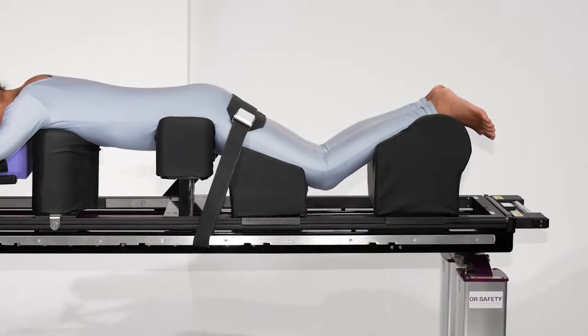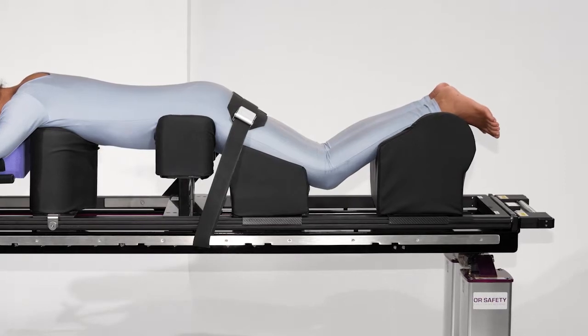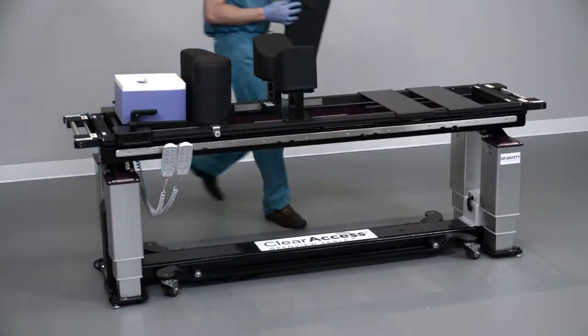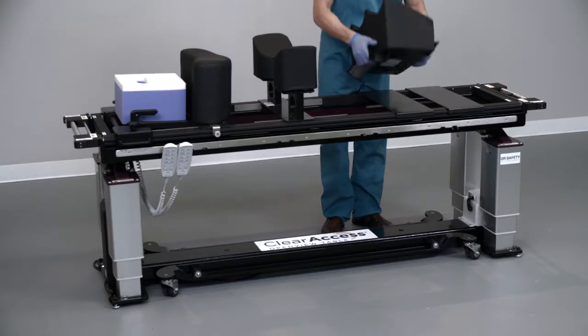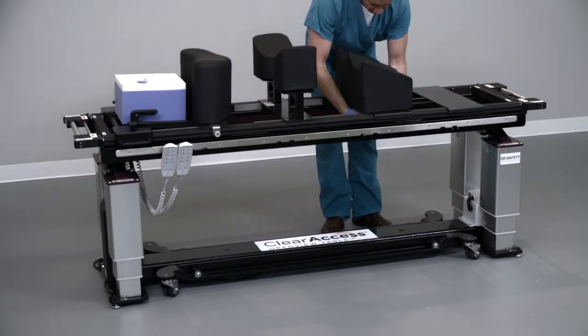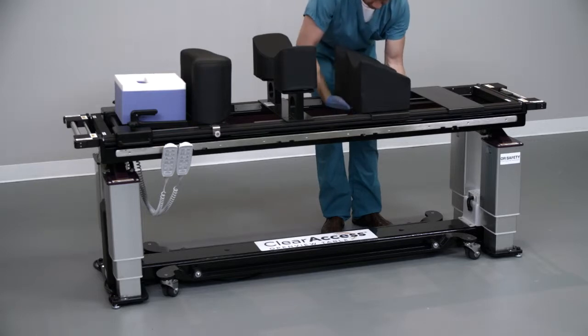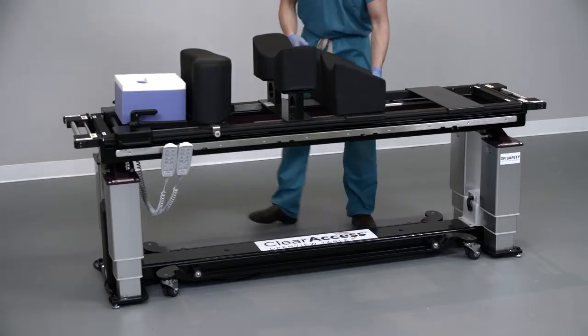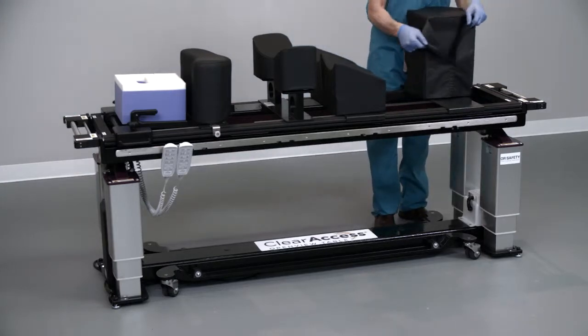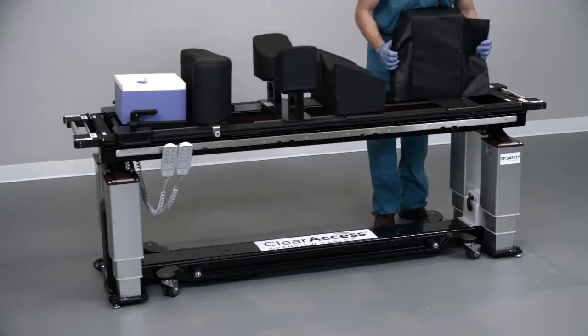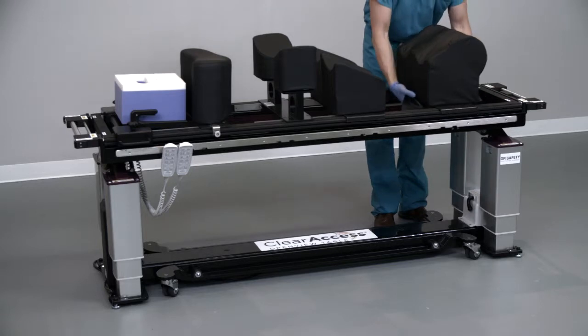The leg management system includes a thigh pad and an ankle rest. Install the thigh pad on the carbon fiber support closest to the open frame by wrapping the flaps of the pad around the support and joining the velcro underneath. Adjust the placement of the pad as necessary by sliding it toward the head or foot end of the table. Repeat the installation procedure with the ankle rest on the carbon fiber support closest to the foot end of the table.